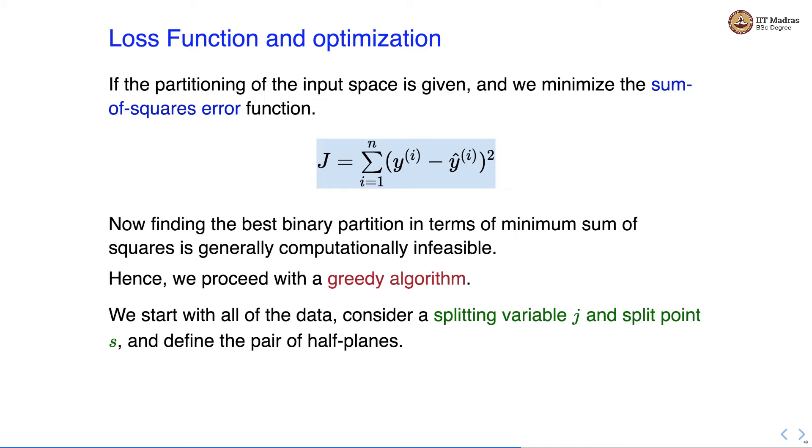We start with all the data, consider a splitting variable j and split point s and define the pair of half planes such that we assign the point to region R1 if it is less than s for the feature j and if its value is greater than s for feature j, we assign it to half plane which is R2.